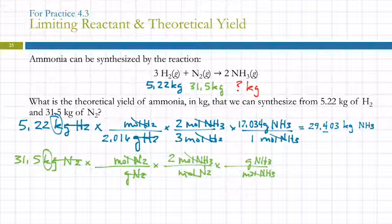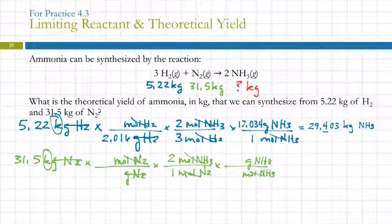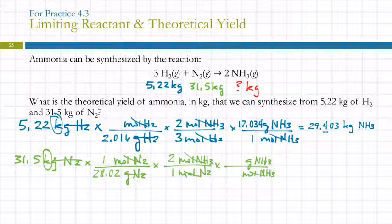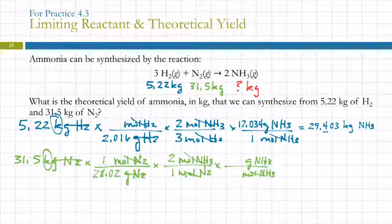There are different ways of thinking about this, and this is what your book talks about doing. If you've got masses instead of moles, you start with the mass of reactant A, convert to moles of A, then convert to moles of the product; you do the same for the other reactant; you look at which number of moles is smaller, and then convert that to the mass of the product. That is a valid way, but I think it involves a little too much thinking, so I'm not going to do it that way.